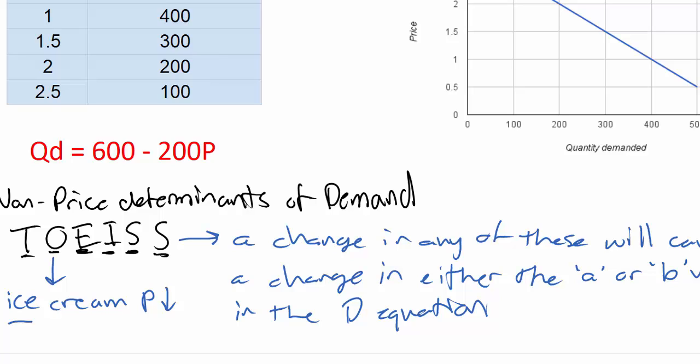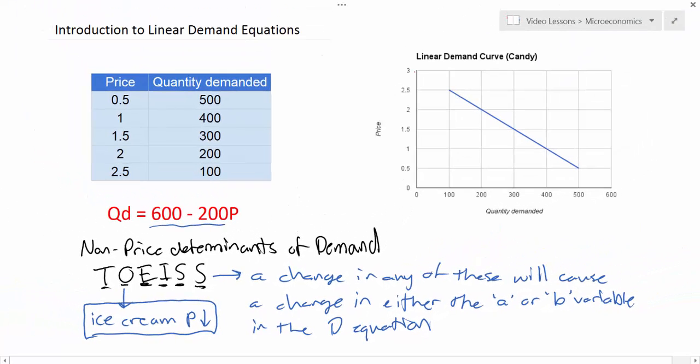How are ice cream and candy related? Well, these are both delicious treats that children could consume instead of one another. If the price of ice cream decreases, how is that going to affect the equation for demand for candy? What is the relationship between ice cream and candy? We could say that they're substitute goods.